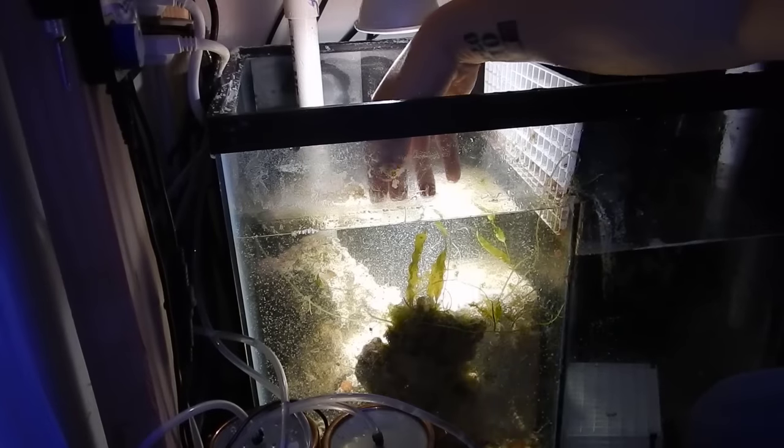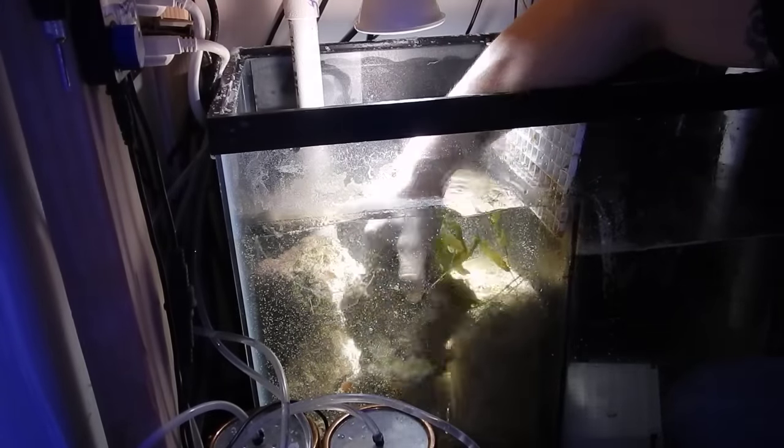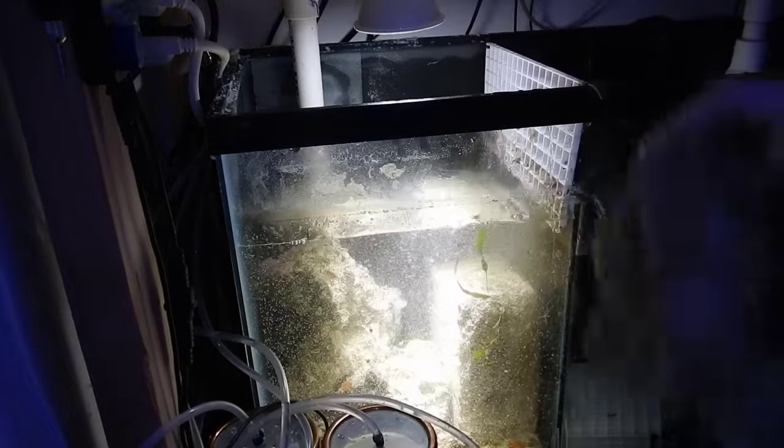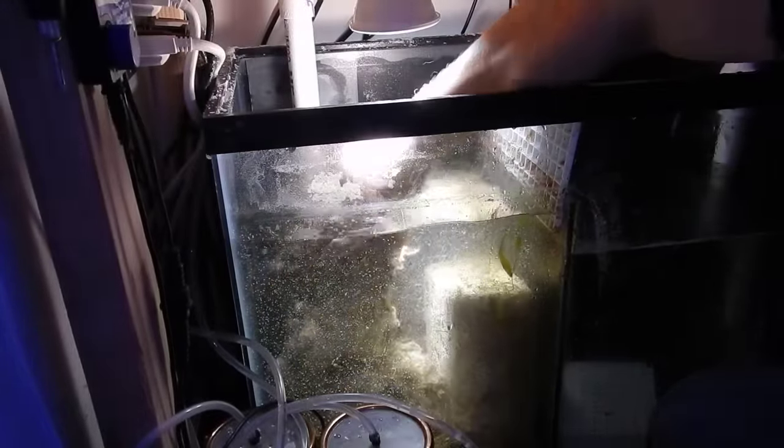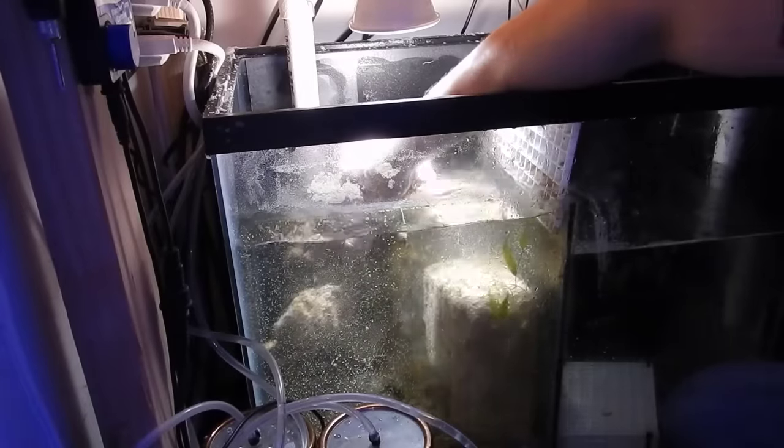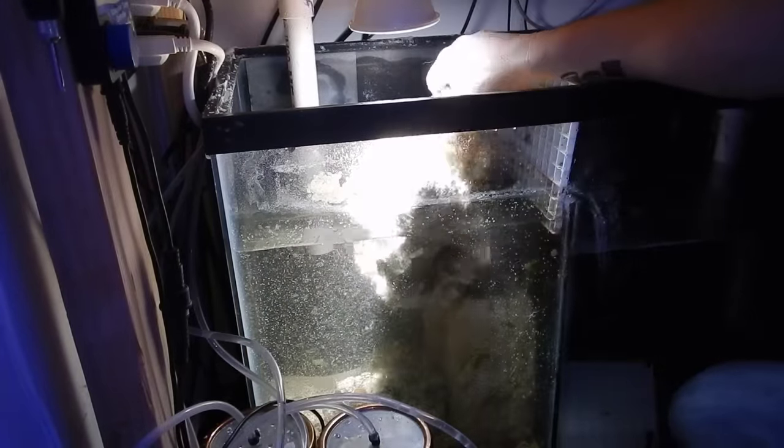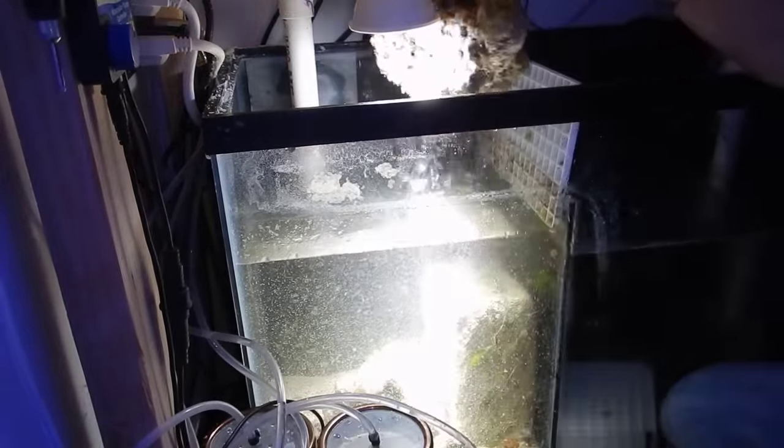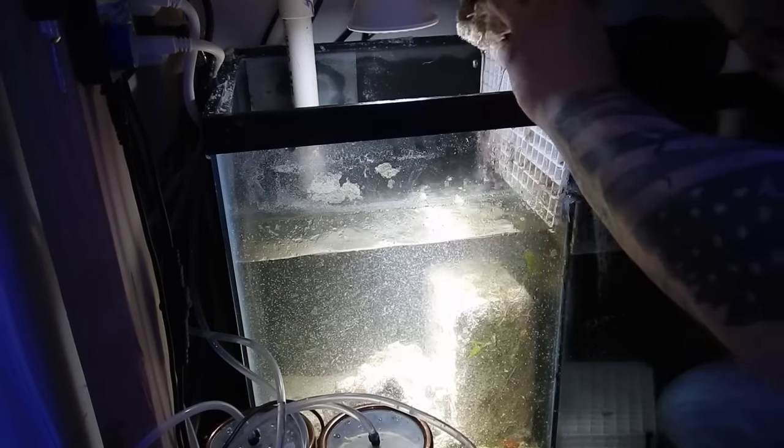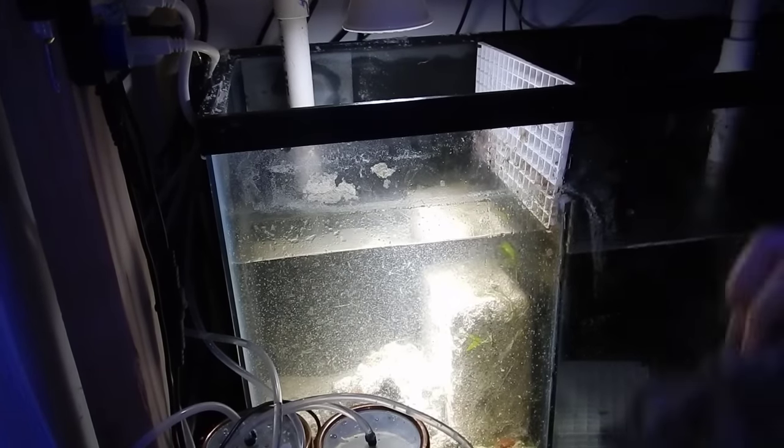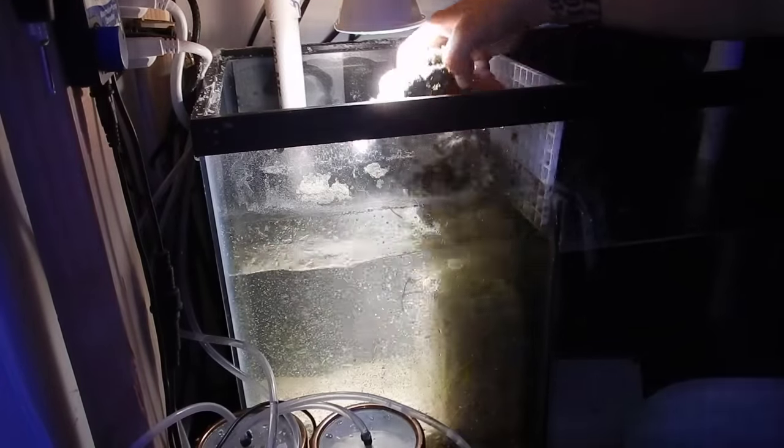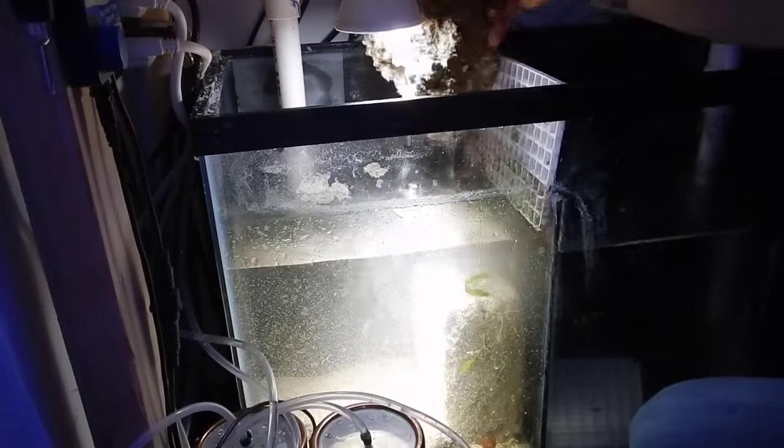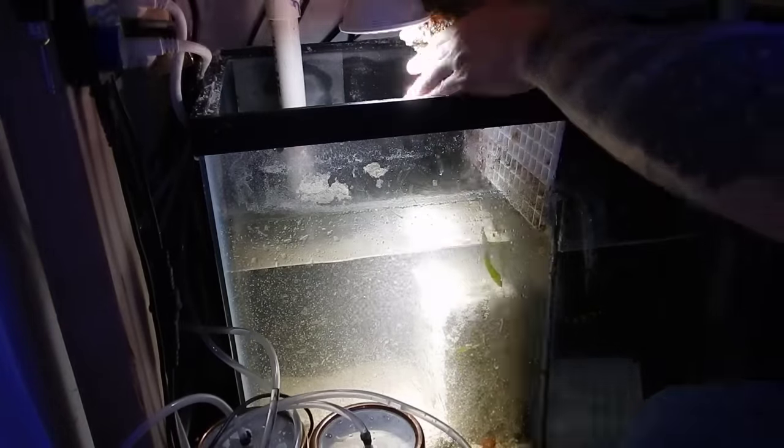Once that was done I went ahead and removed the macro algae, tossed it in the trash. I'm also going to go ahead and throw out this live rock. There's about 35 pounds in there. Now the reason why I'm throwing it out is I've had it for several years and I ended up getting it used so who knows how old it is and what has happened to it and I think that this might be part of the reason why I'm having some nutrient issues in the system with not even having any fish in it or at least having a minimal amount of fish. So I feel that I'm just going to go ahead and toss it out and use the marine pier block because honestly that marine pier block has so much more surface area for beneficial bacteria than all that live rock combined.